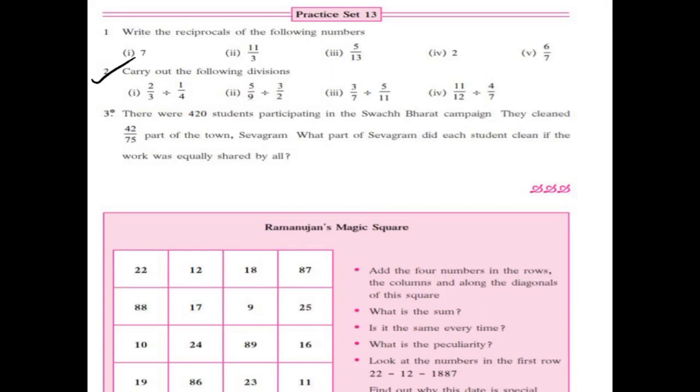Carry out the following divisions. First one: 2 upon 3 divided by 1 upon 4. Write the first fraction, 2 upon 3, as it is. Change the division into multiplication. The second fraction, 1 upon 4, becomes its reciprocal: 1 upon 4 becomes 4 upon 1. Now multiply numerator and denominator. That is equal to 8 upon 3.